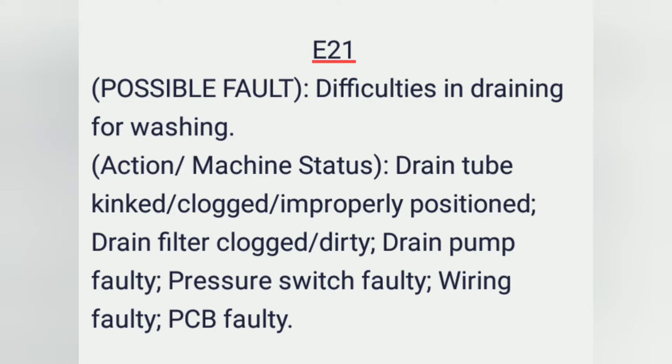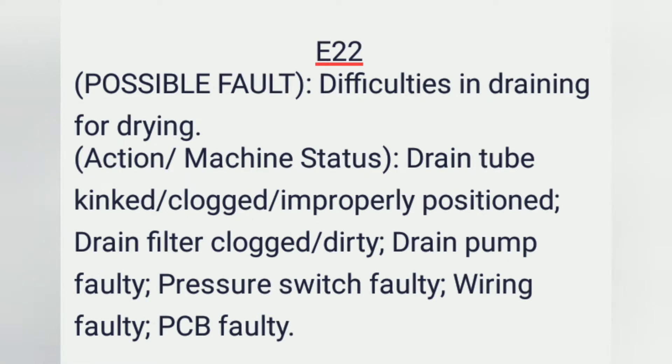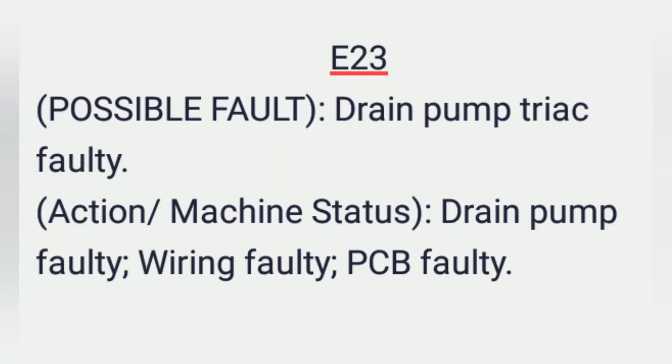E21 action/machine status: drain tube kinked, clogged, or improperly positioned, drain filter clogged or dirty, drain pump faulty, pressure switch faulty, wiring faulty, PCB faulty. E22 possible fault: difficulties in draining for drying. Machine status: drain tube kinked, clogged, or improperly positioned, drain filter clogged or dirty.